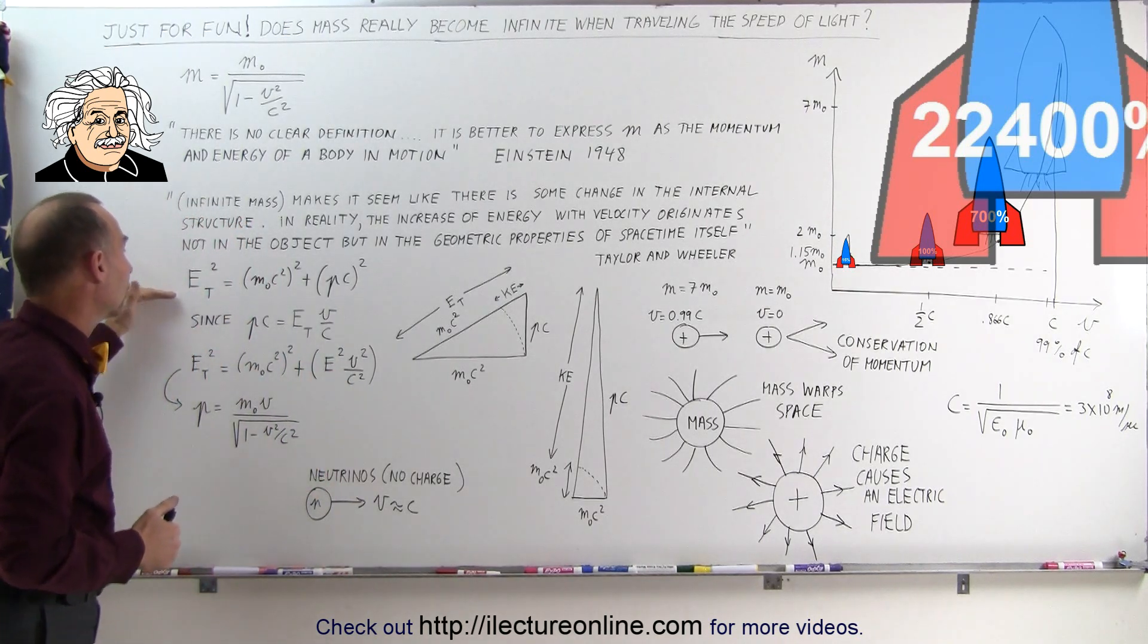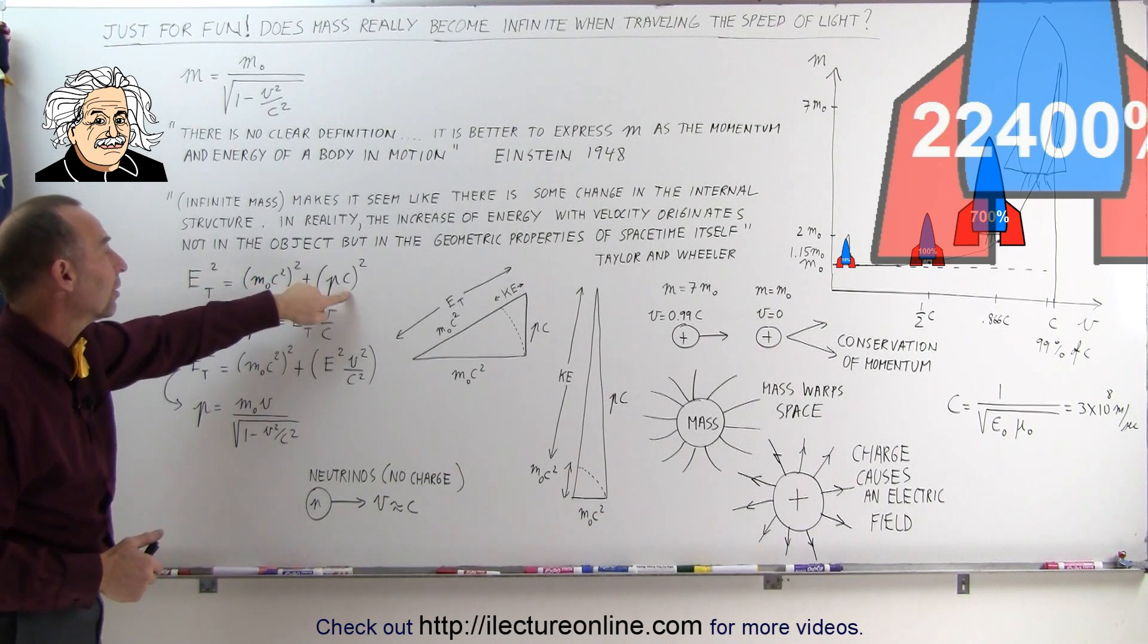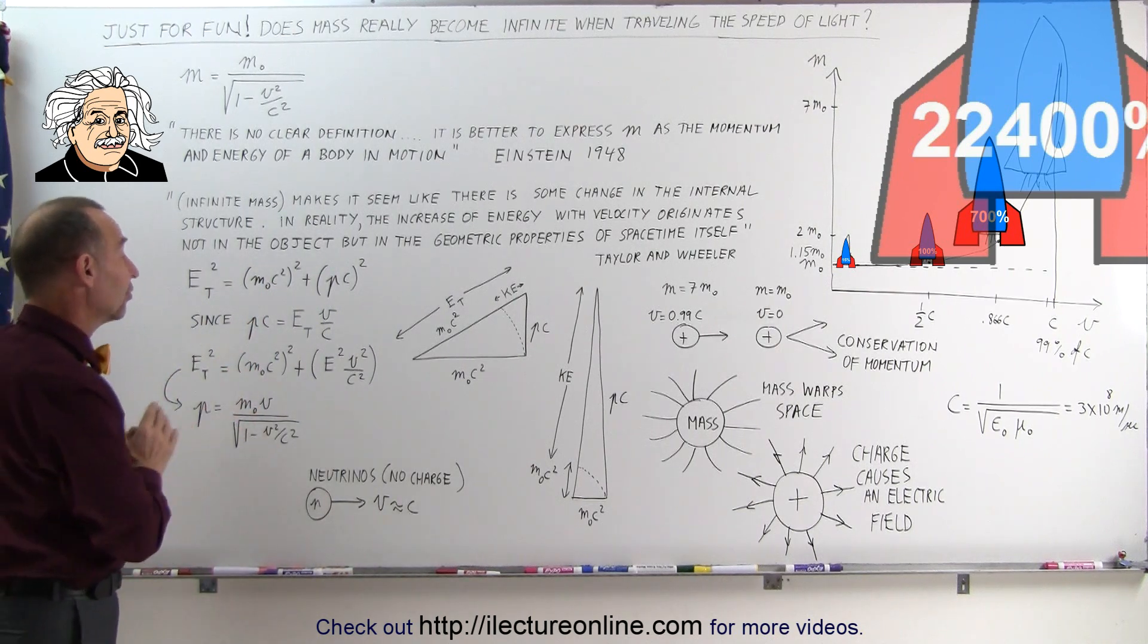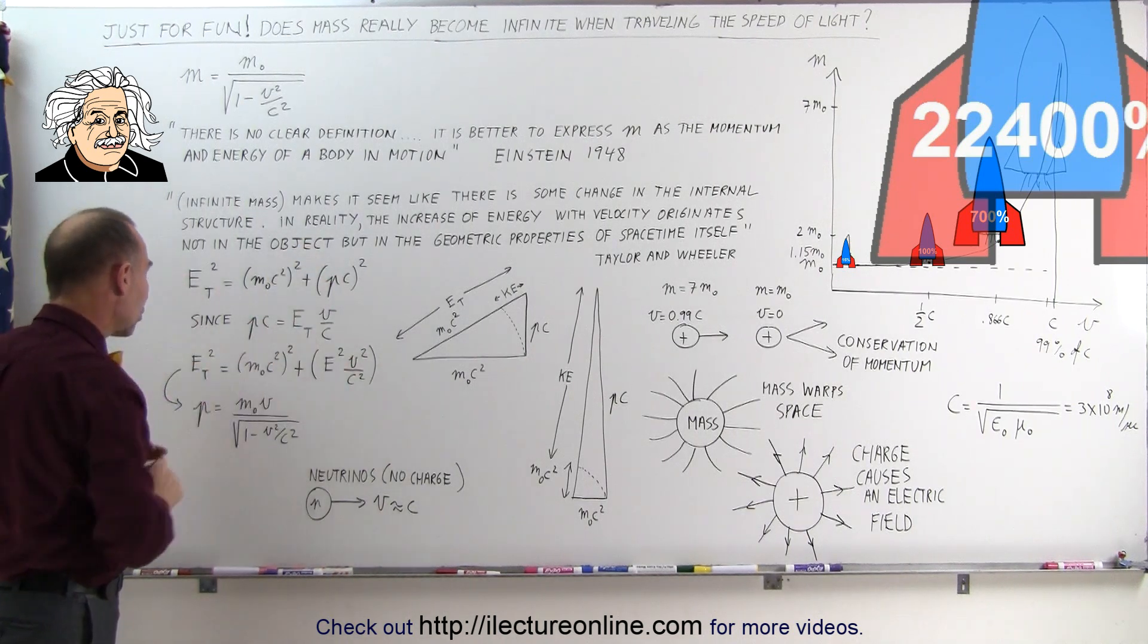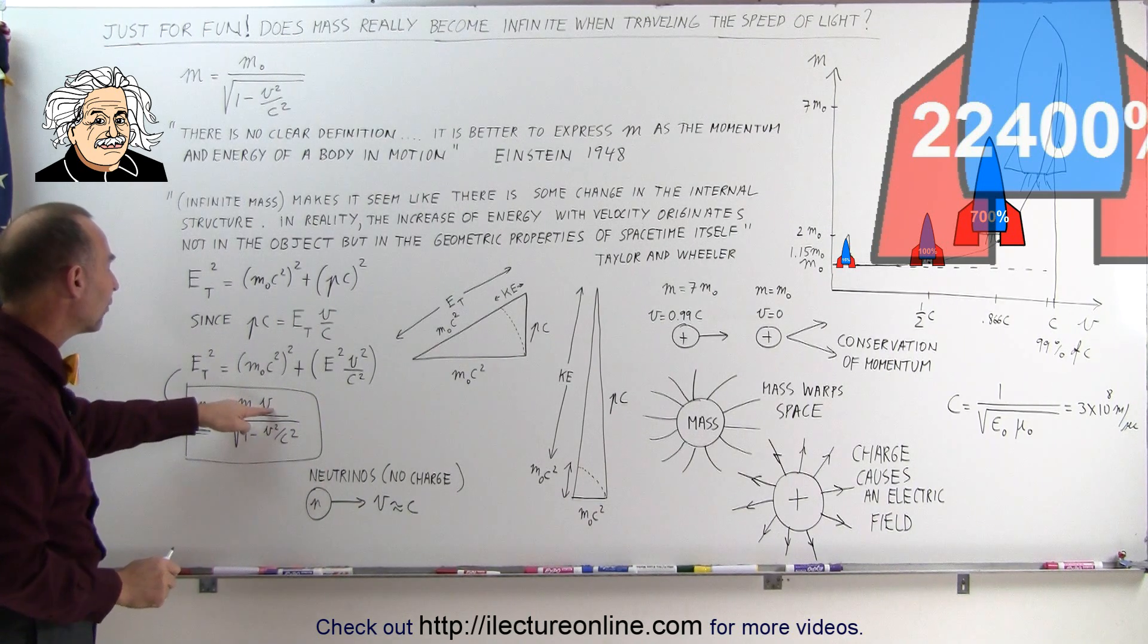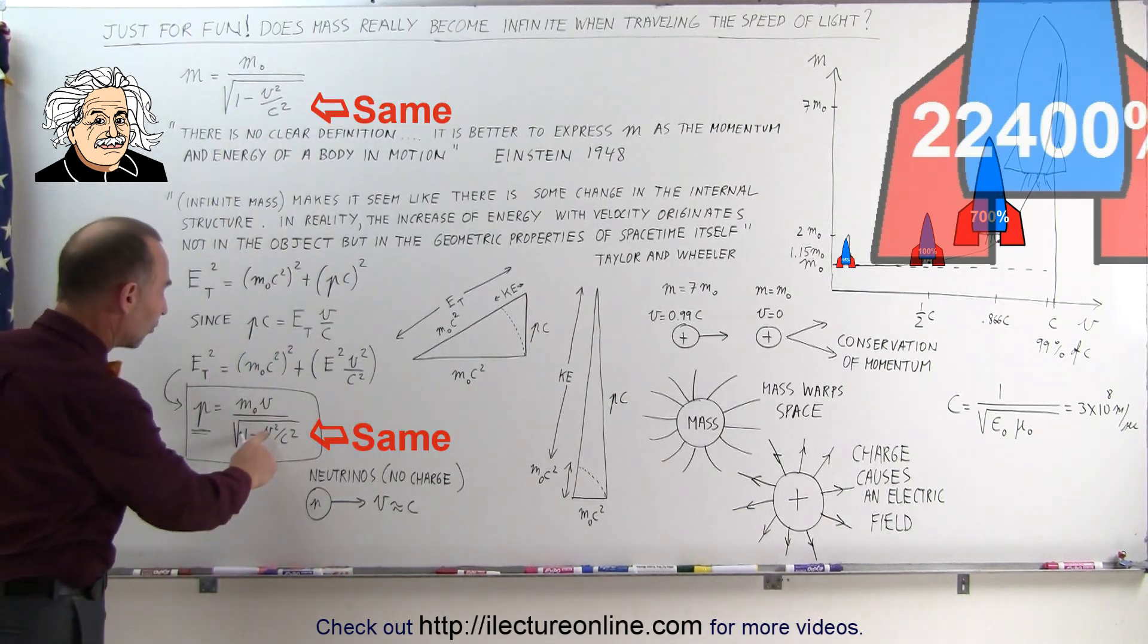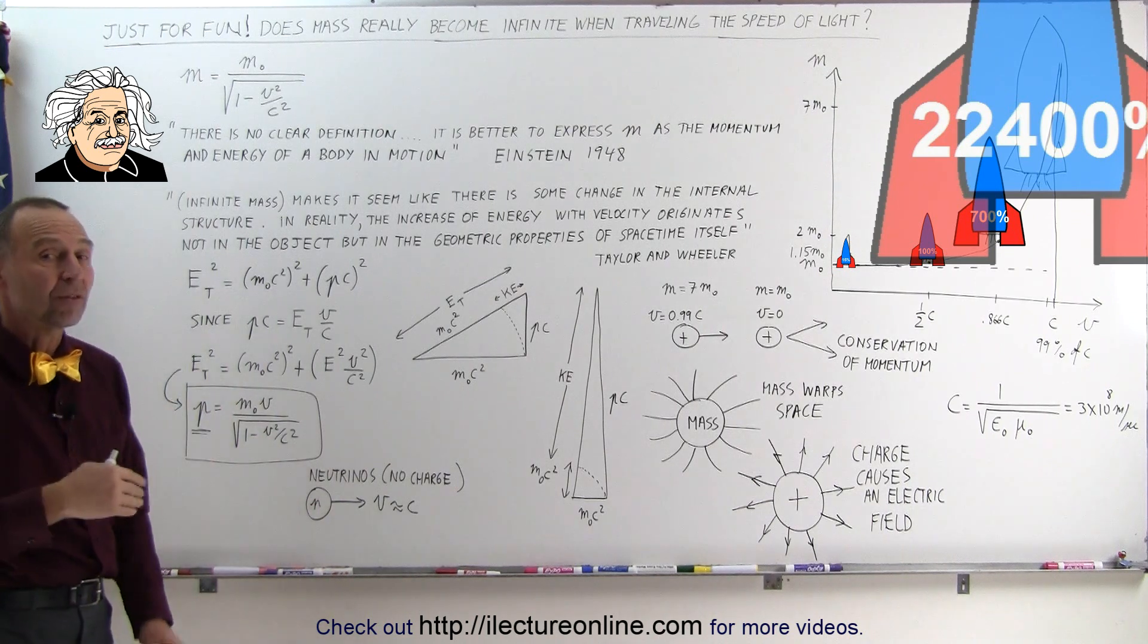Equations were developed like this one where the total energy squared is equal to the rest mass squared plus the momentum times the speed of light squared. If we manipulate this equation properly, the momentum times the speed of light can be written as this. We plug that into the equation and eventually we come up with a different equation where the momentum can be expressed in terms of the rest mass times the velocity divided by this quantity. Notice as V becomes equal to C, this becomes one, one minus one is zero, and anything divided by zero becomes infinite.